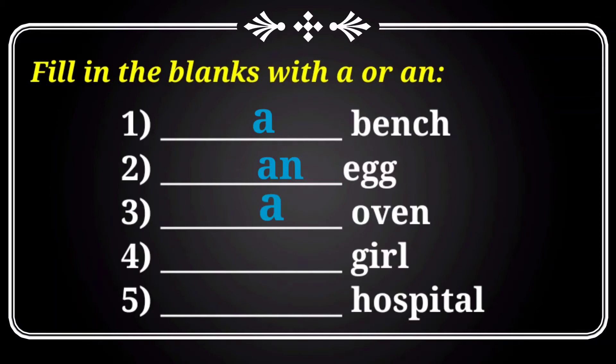Look at the fourth one: blank — gul. 'G' comes under a consonant, so you have to use 'a gul'. Look at the fifth one: blank — hospital. The 'h' sound comes under a consonant. So you have to use 'a hospital'.